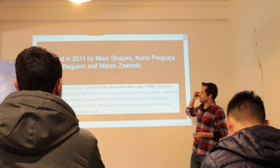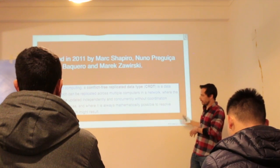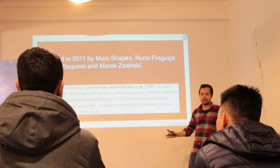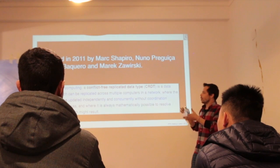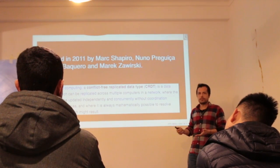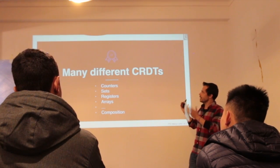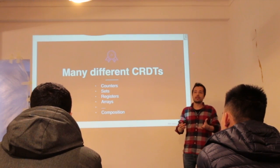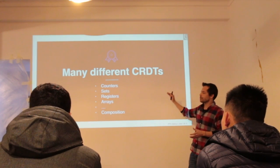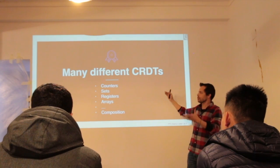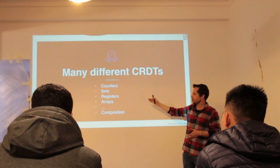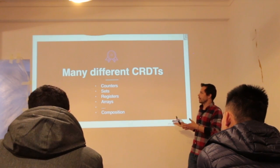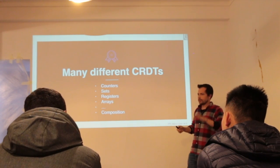A CRDT is a data structure which can be replicated across multiple computers in a network, where the replicas can be updated independently and concurrently without coordination between them — so without special nodes — and where it is always mathematically possible to resolve conflicts. There are many different types of CRDTs — it's not something very concrete, it just obeys a bunch of mathematical rules. There are types for counters, sets, registers, arrays, and compositions of all of these.